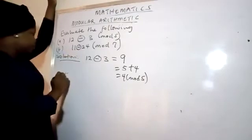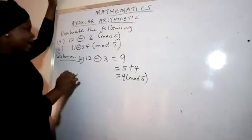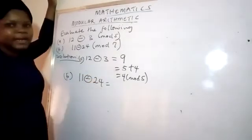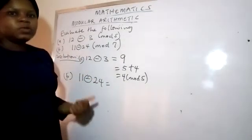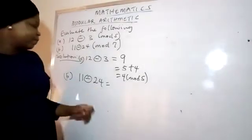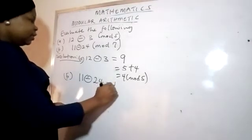Now the next one. I have 11 minus 24. What is 11 minus 24? If you want to solve that, just tell me I have 11, I'm owing 24. If I pay 11, I'll be owing what? 13.